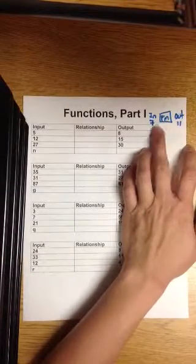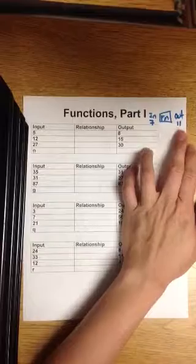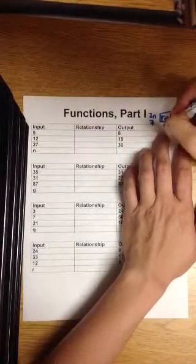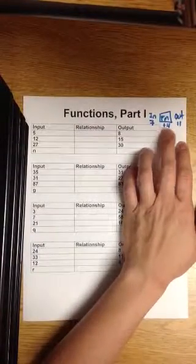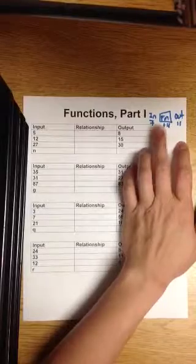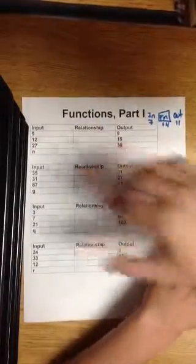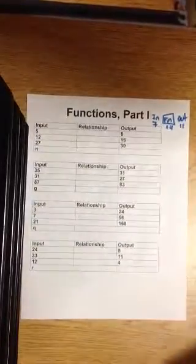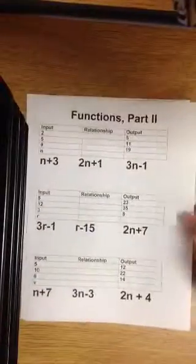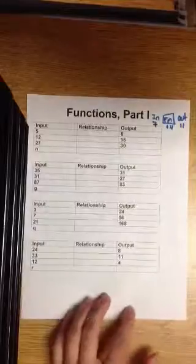So what did we do to our 7 to come out as 11? I think we added 4 to it. So the function rule added 4 to all these input numbers to become 11. So this lesson is over single operation. In our part 2 lesson, it will be over double operation. So let's start with our first lesson.